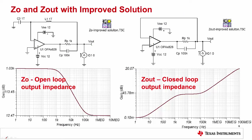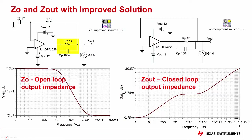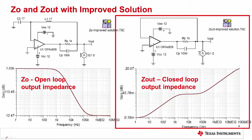The last slide of this video shows the simulated open and closed loop output impedance for the improved circuit. For the open loop simulation, the large 1 tera henry and 1 tera farad capacitor is used to break the feedback loop, which results in an open circuit. The open loop circuit measured output impedance is the RP and CP parallel combination in series with the amplifier's output impedance. At low frequencies, the output impedance is dominated by the 1 kilohm resistor. However, at higher frequencies, the 1 kilohm resistor is shorted by the capacitor, which results in the amplifier's output impedance becoming dominant.